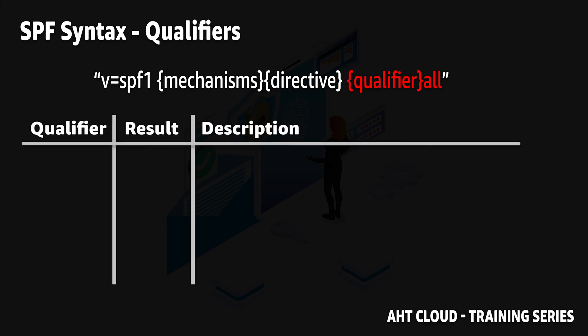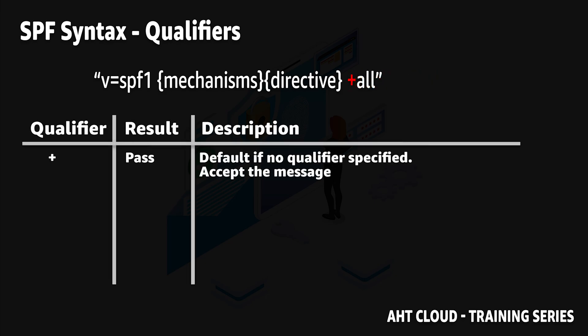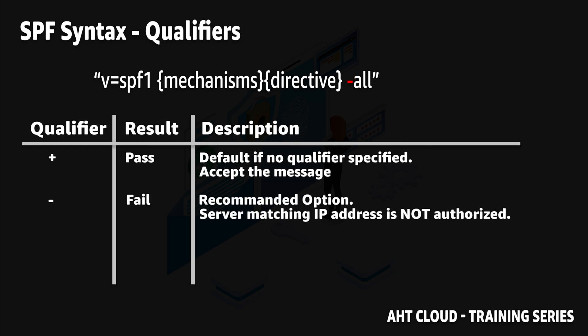There are four different types of qualifiers. The first one is the plus sign (+), which is the default qualifier used if you don't specify another. This means the email service provider should always accept the incoming email. I don't recommend this option. The second qualifier is the dash sign (-), which I always recommend — it tells the email service provider to always fail when the email is not part of your authorized list.